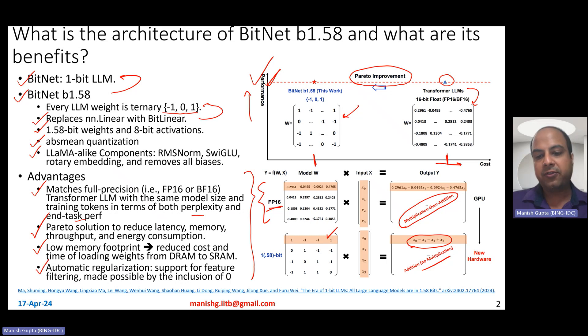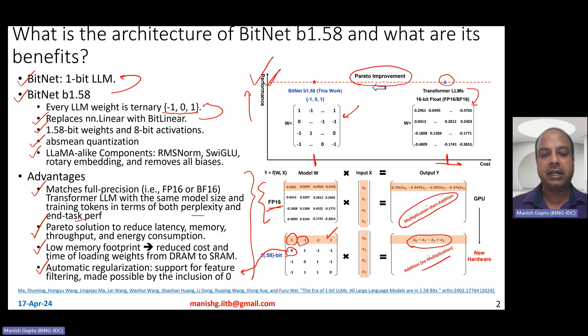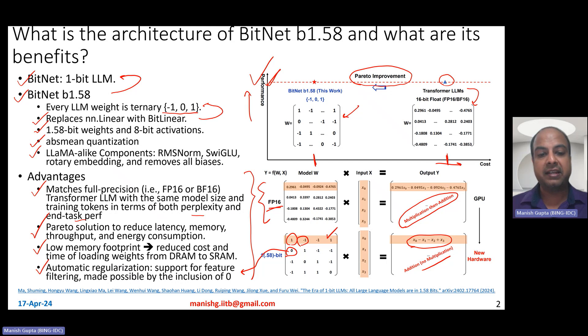Also, if you look at it, these weights are one, minus one, or zero. The zero weights basically mean automatic regularization because this supports feature filtering implicitly.